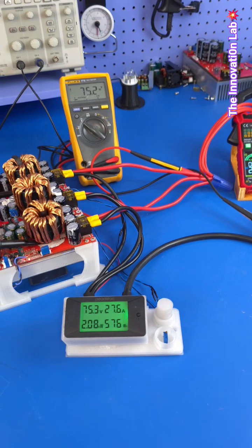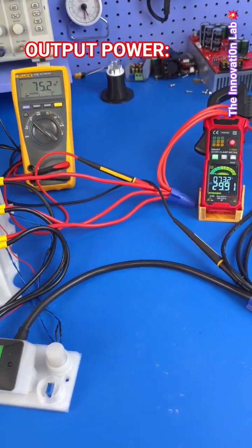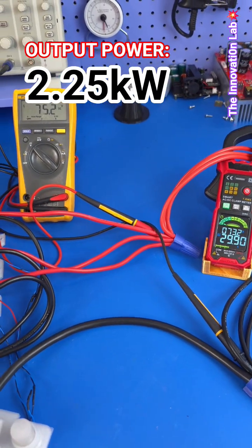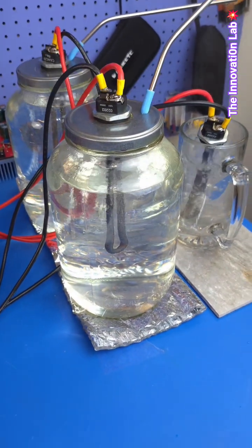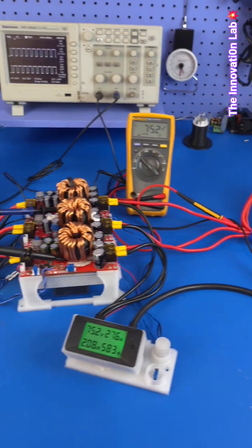As you can see here, we are pushing an output current of close to 30 amps at 75 volts, and the entire system is performing very well and working together to share this load.